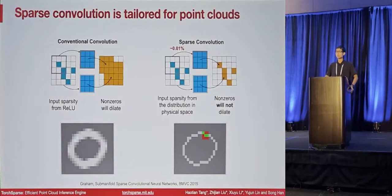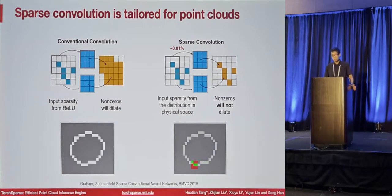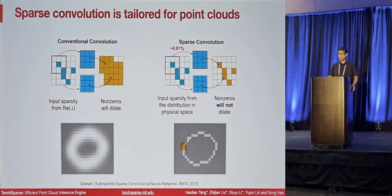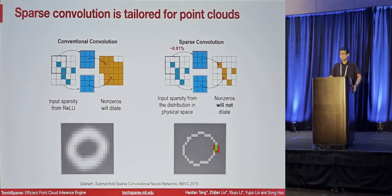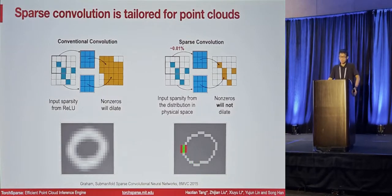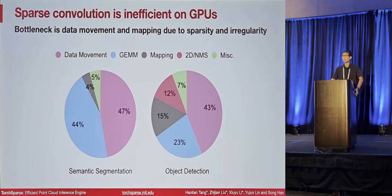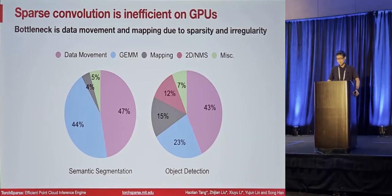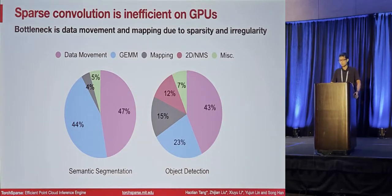If we look at the major computation in 3D sparse CNNs, we can see that there is one operation called sparse convolution that dominates the computation flow. Sparse convolution stems from conventional convolution, with the idea of skipping all computation on regions where the output is bounded to be zero — keeping the sparsity of input and output the same. We found that sparse convolution is bottlenecked by data movement and mapping operations, because the point cloud data is sparse and irregular, and we spend 40% to 50% of total runtime structuring data and defining the rule of computation.